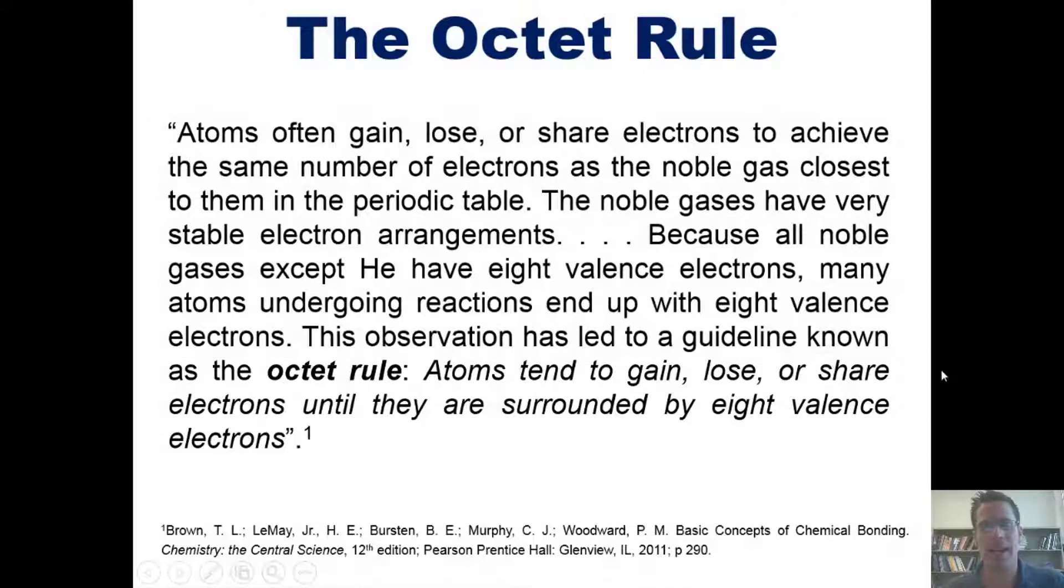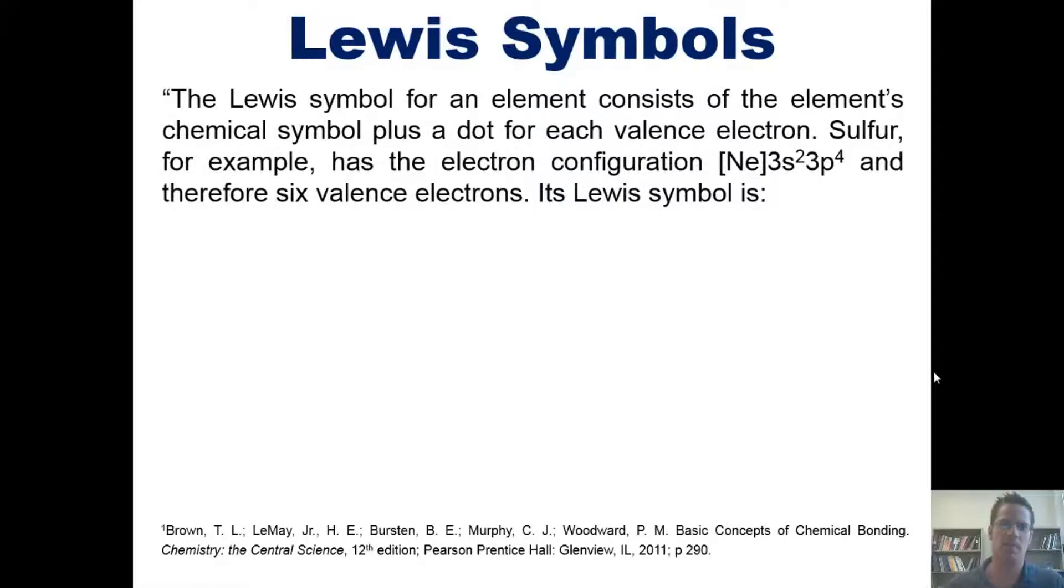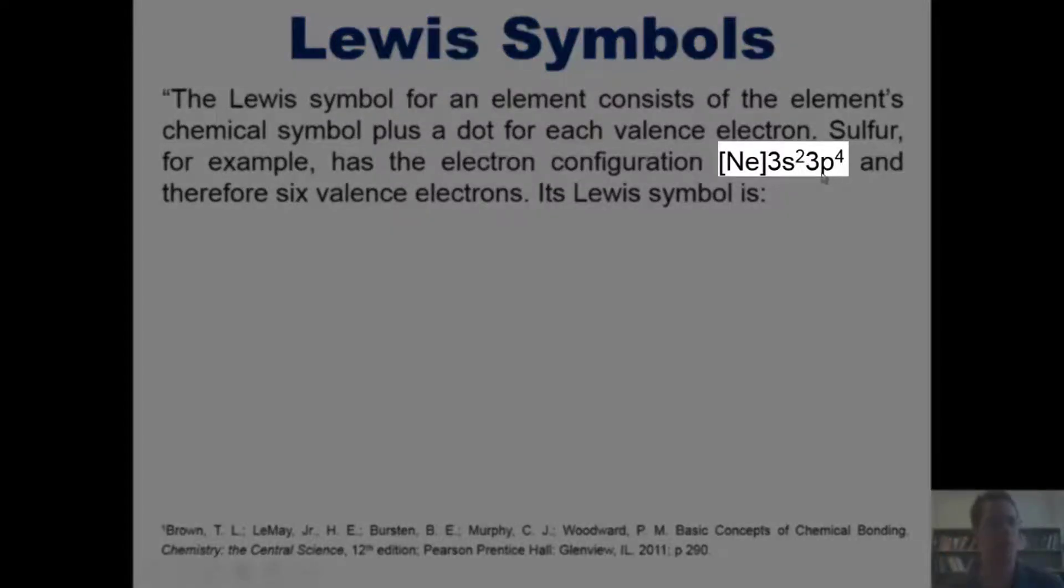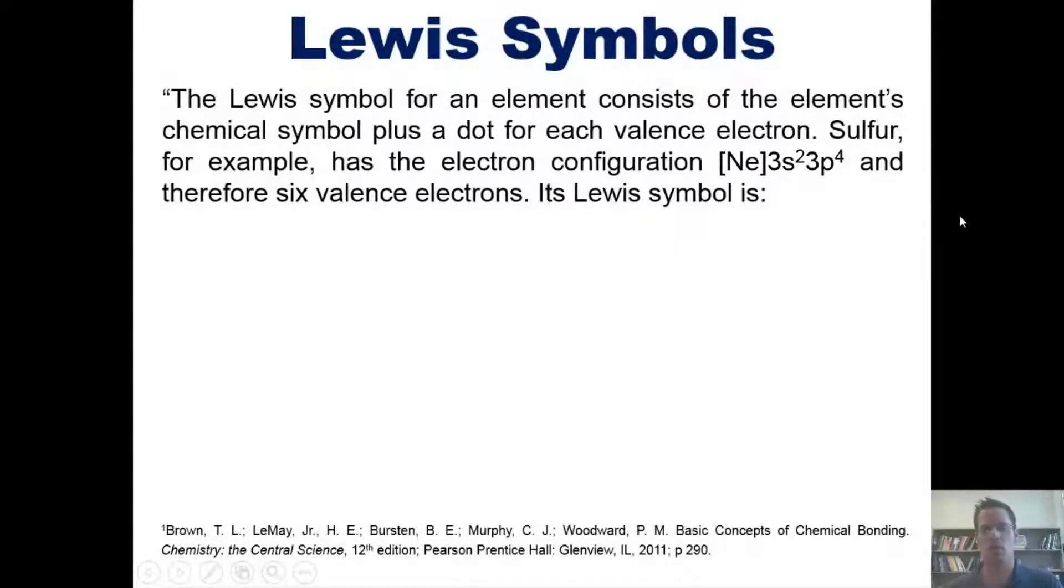Now, with that groundwork laid, I now want to introduce you to something called Lewis symbols. The Lewis symbol for an element consists of the element's chemical symbol plus a dot for each valence electron. Sulfur, for example, has the electron configuration of neon, then 3s2, 3p4, and therefore has six valence electrons, the two in its outer 3s orbital and these four right here in its outer 3p orbital. Its Lewis symbol, therefore, looks like this, where once again I've got its atomic symbol, S, and six valence electrons surrounding it.